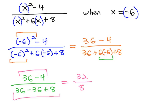Now that there's no more adding or subtracting in the fraction, now we are allowed to reduce by identifying common factors. 32 over 8 reduces to 4.